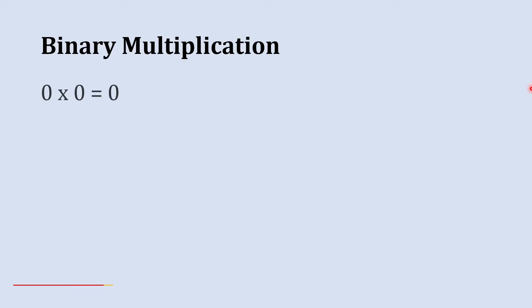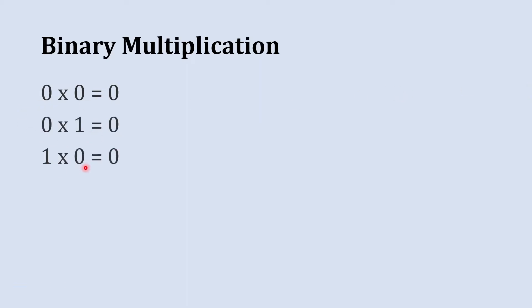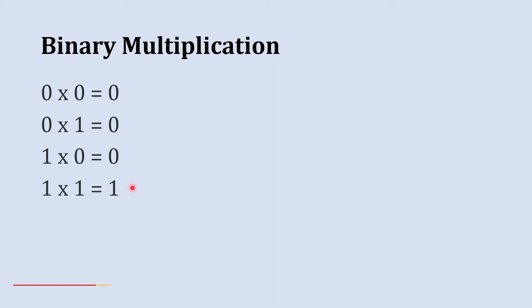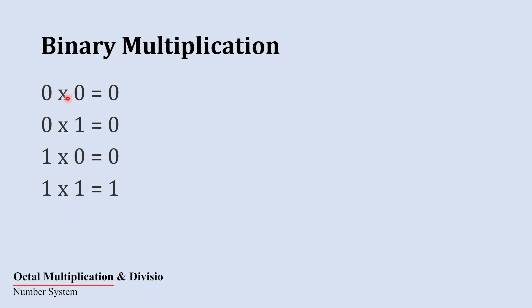When we multiply 0 with 0 the answer is 0. When you multiply 0 with 1 it's 0, and 1 with 0 it's 0. It is only the last case when you multiply 1 with 1 that the answer is 1. In all other cases you are just multiplying 0 with another digit, so whenever you multiply 0 with any digit the answer is 0.